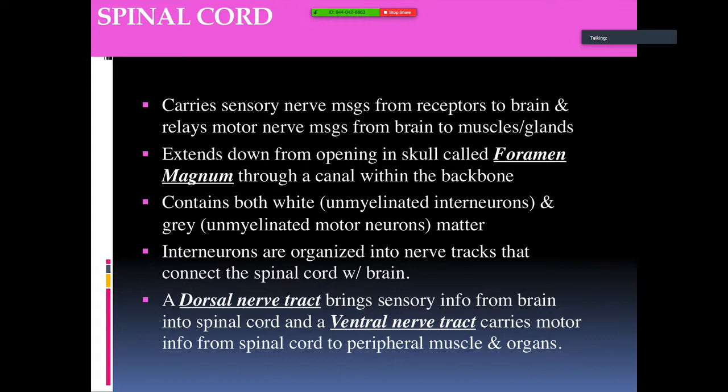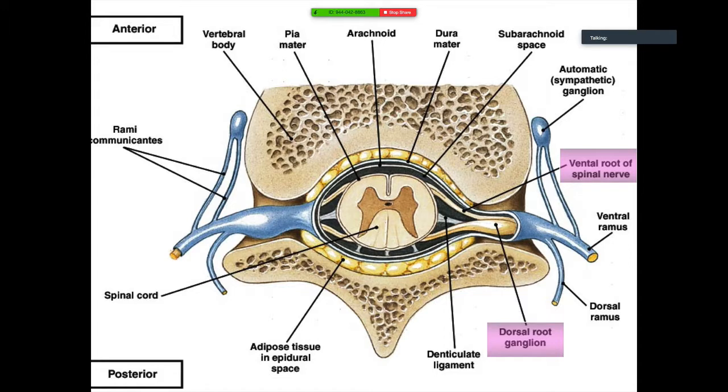A dorsal nerve tract brings sensory information from the brain into the spinal cord, and a ventral nerve tract carries motor information from the spinal cord to peripheral muscles and organs. Looking at the cross-section, you can see the ventral nerve root on one side and the dorsal root on the other, with the same arrangement on both sides.